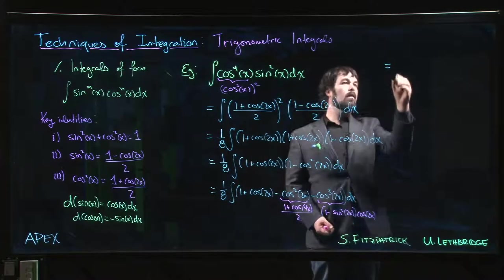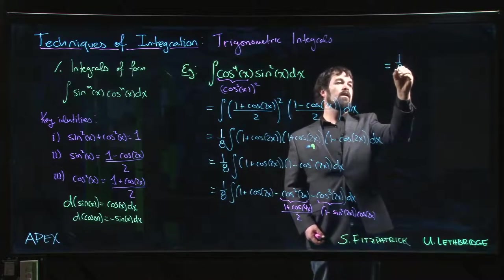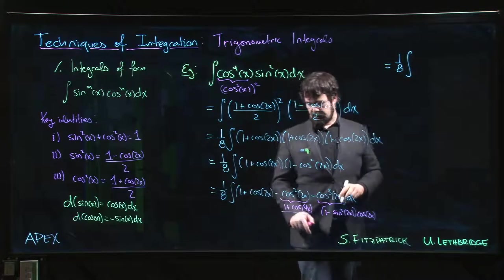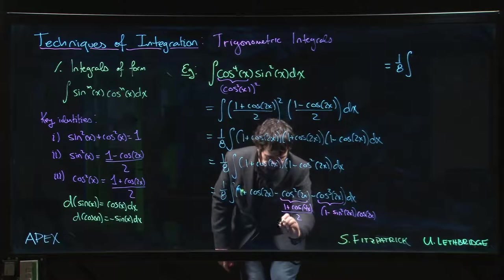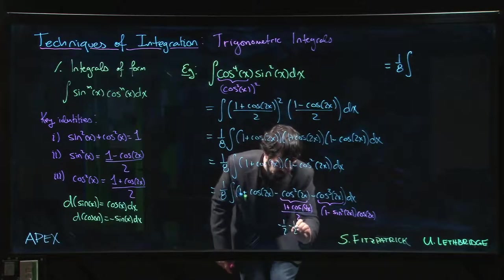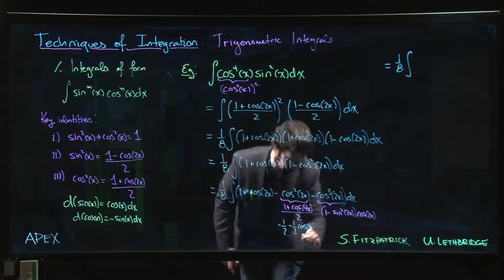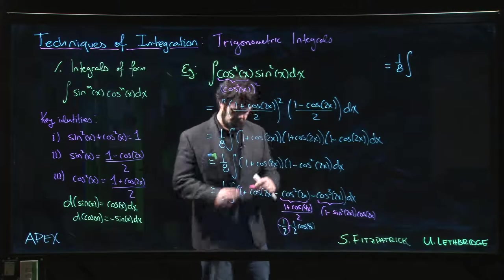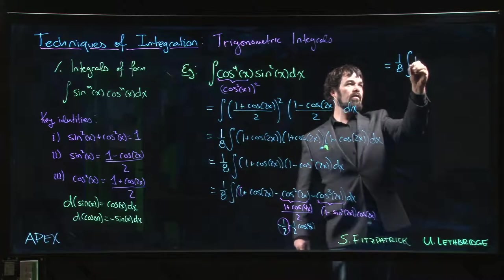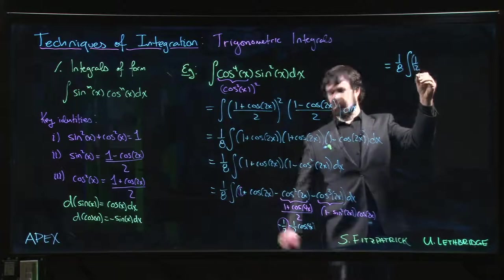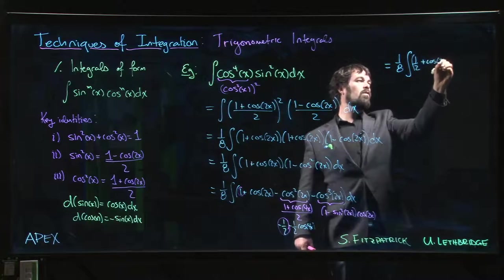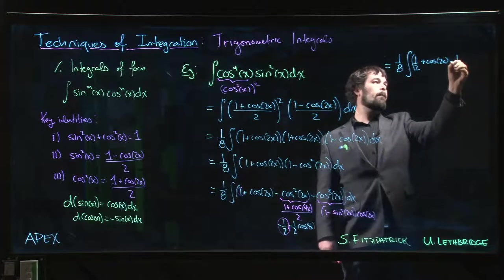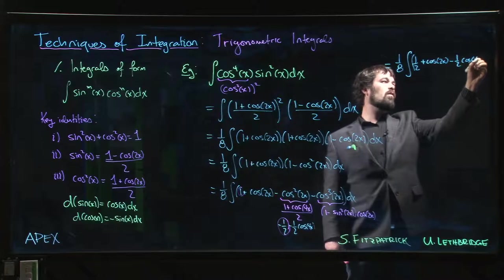All right. So we have 1 over 8 times the integral of, let's see, 1. We can even combine this up. So here we have, if we push that minus sign through, this is minus 1 half, minus 1 half cos 4x. So I'm going to take this 1 and subtract 1 half. I'm going to combine those two constants. So I have 1 half plus cos 2x minus 1 half cos 4x.